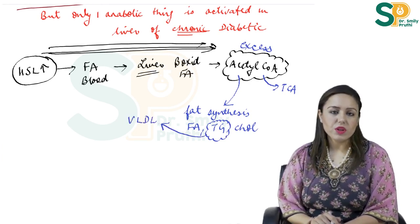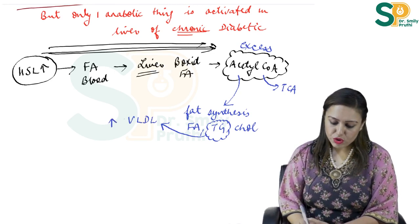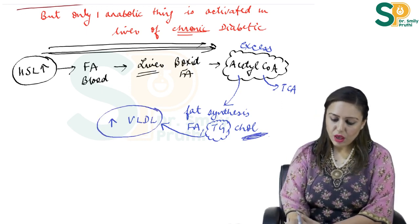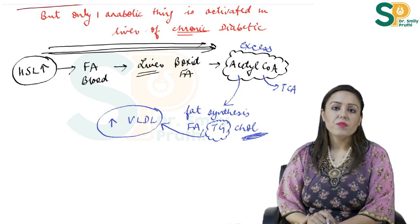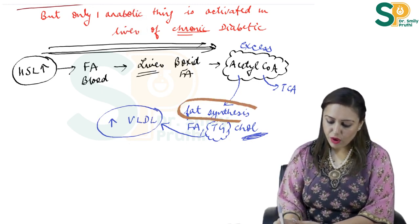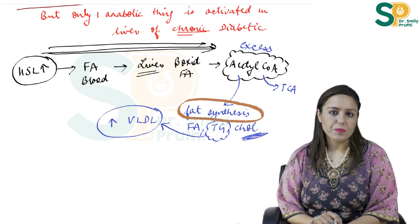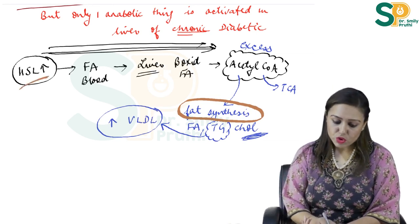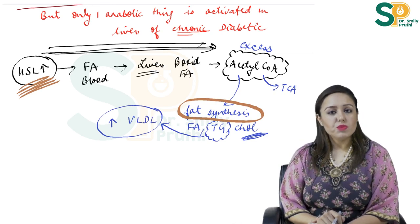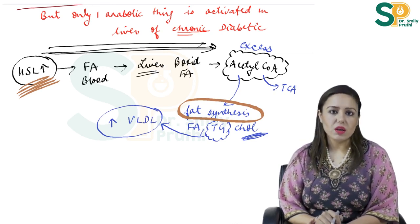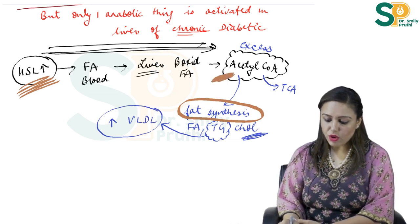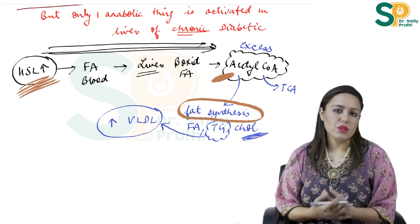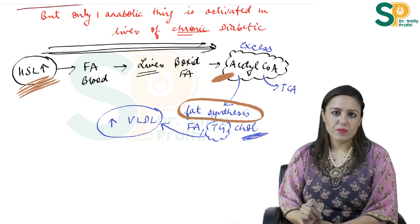This fat can be transported to the blood in the form of VLDL, so VLDL will increase in this patient and cholesterol synthesis will also increase. So the one thing activated in a chronic diabetic patient is fat synthesis in the liver — not in the adipose tissue. In the adipose tissue, hormone-sensitive lipase causes catabolism. But because excess acetyl-CoA accumulates in the liver, it becomes fat. So fat synthesis occurs in the liver.